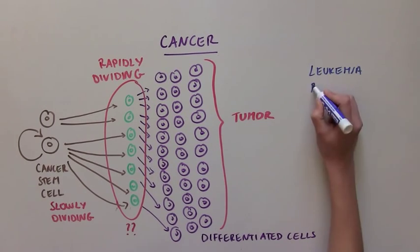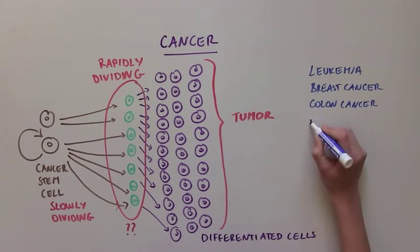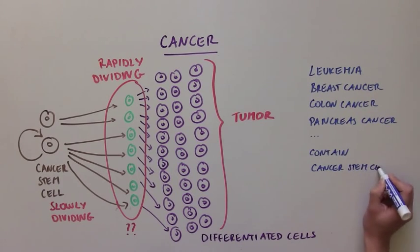Some cancers, such as leukemias, breast, colon, and pancreas cancers, have been found to contain such cancer stem cells.